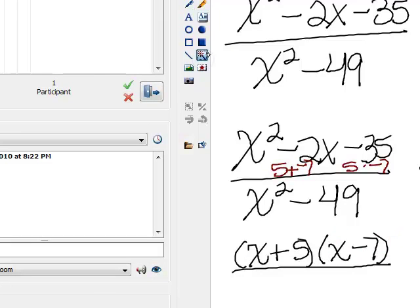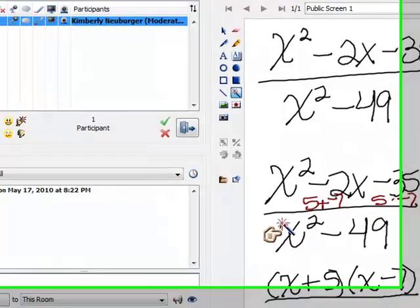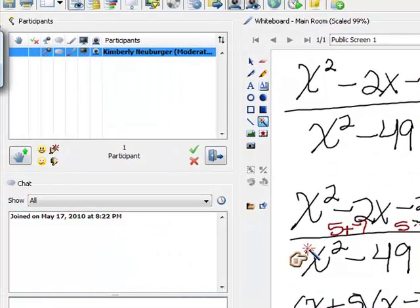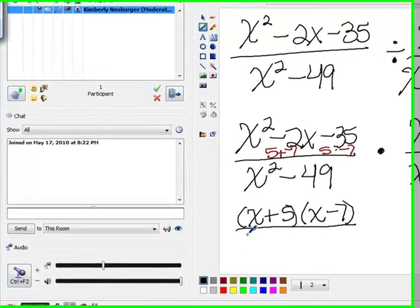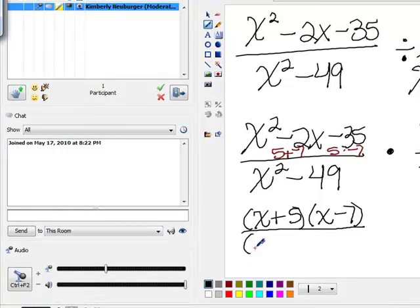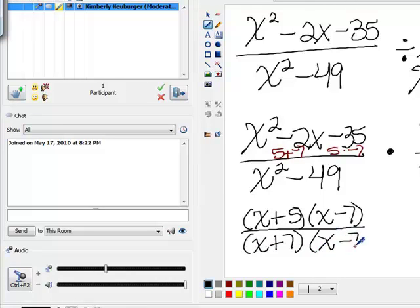Now let's look at the denominator of the first expression. There's two terms, and they're both perfect squares. This first one is x times x, and the second one is 7 times 7. So this one's going to factor into our difference of squares pattern because those two perfect squares are subtracted. So it will be x plus 7 times x minus 7.